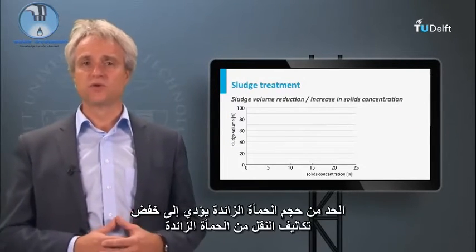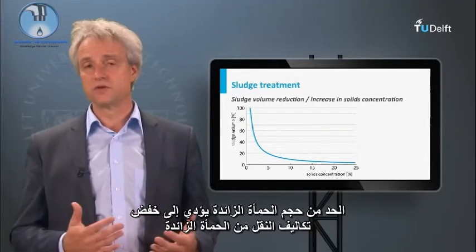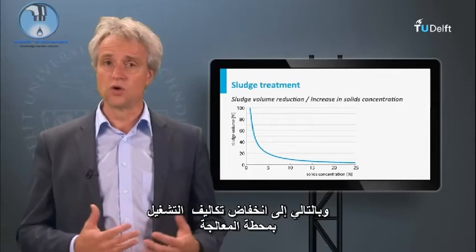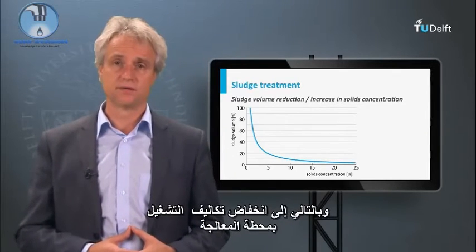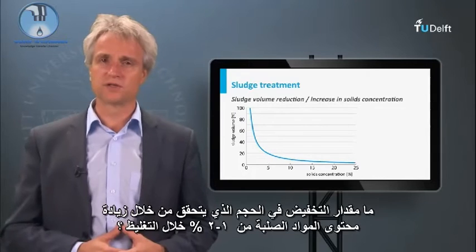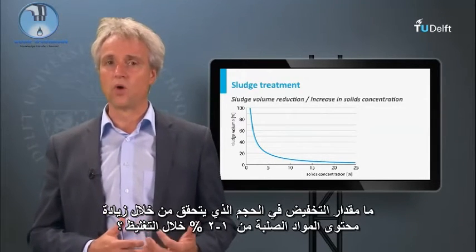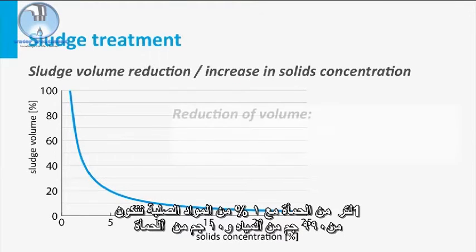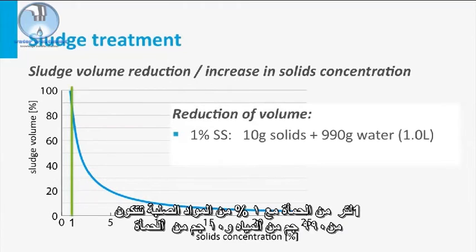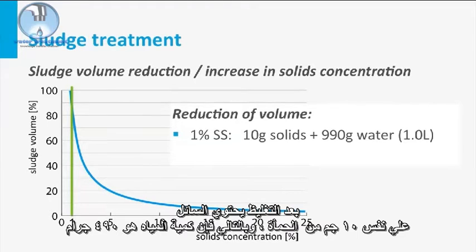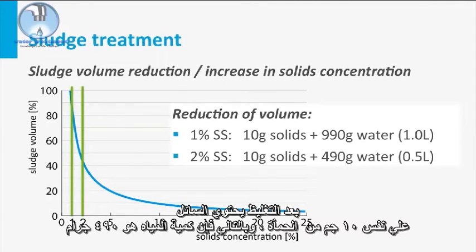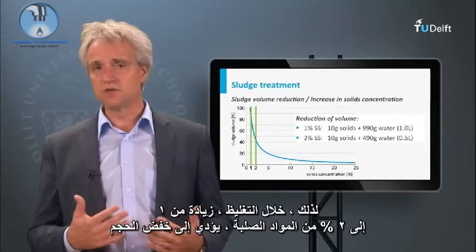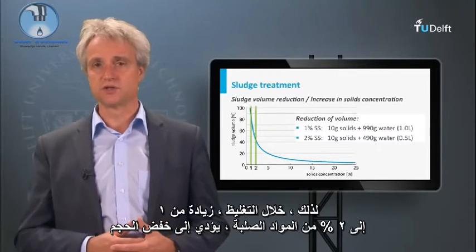Excess sludge volume reduction leads to less transport costs and thus lower operational exploitation costs of the treatment plant. What volume reduction is achieved by increasing the solids content from 1 to 2% during thickening? One liter of sludge with 1% solids consists of 990 grams of water and 10 grams of sludge. After thickening, the liquid contains the same 10 grams of sludge, so the amount of water is 490 grams. An increase from 1 to 2% solids results in a volume reduction of 50%.